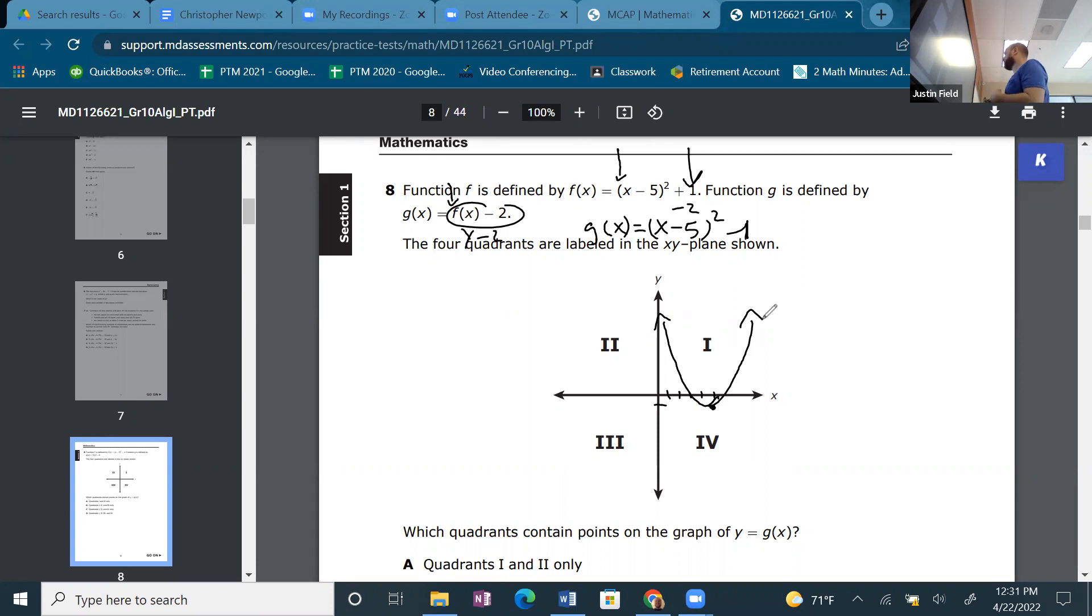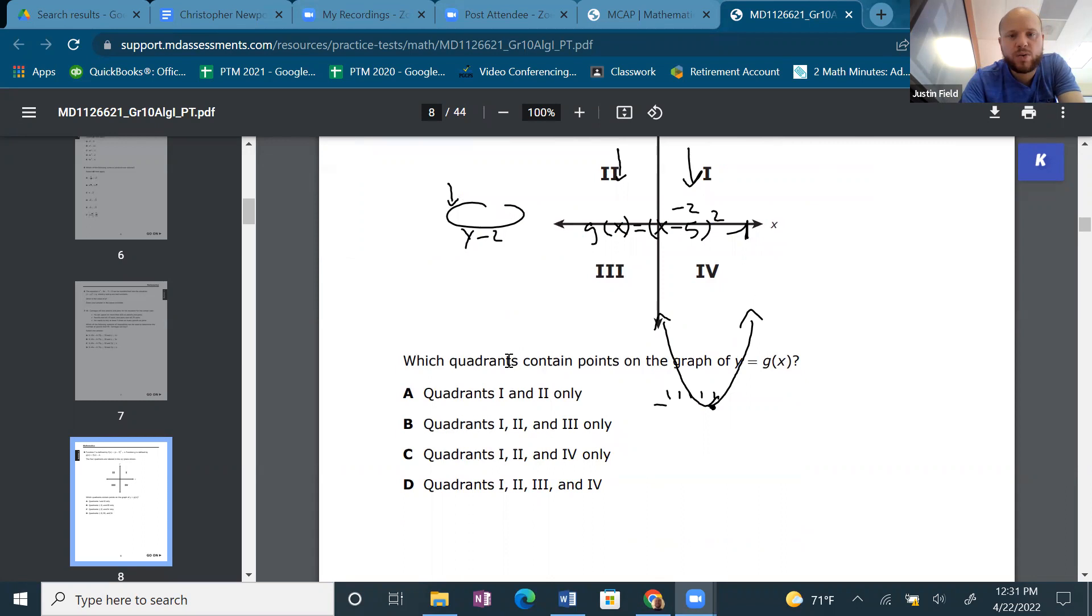Alright, so it starts in quadrant 4 and then goes up to quadrant 1, eventually passing through quadrant 2. Never touches quadrant 3. What quadrants contain points on the graph? Hey! I didn't even realize I was answering that question. 1, 2, and 4. C is your answer.